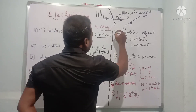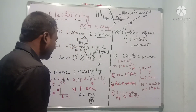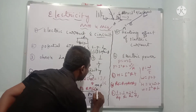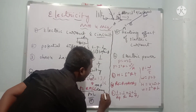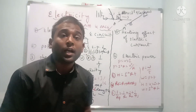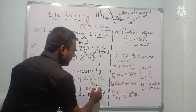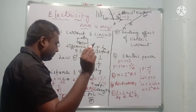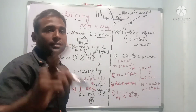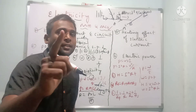A useful mnemonic for the factors affecting resistance is 'ANTL': area of conductor, nature of material, temperature, and length of the wire. Very important: in the case of a conductor, if temperature increases, resistance increases. But in the case of a semiconductor, if temperature increases, resistance decreases.